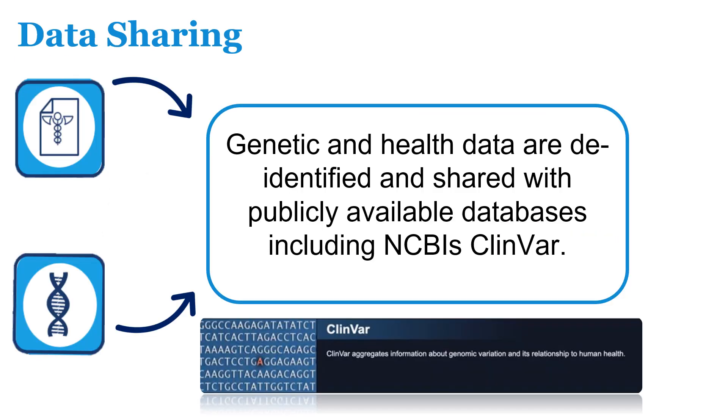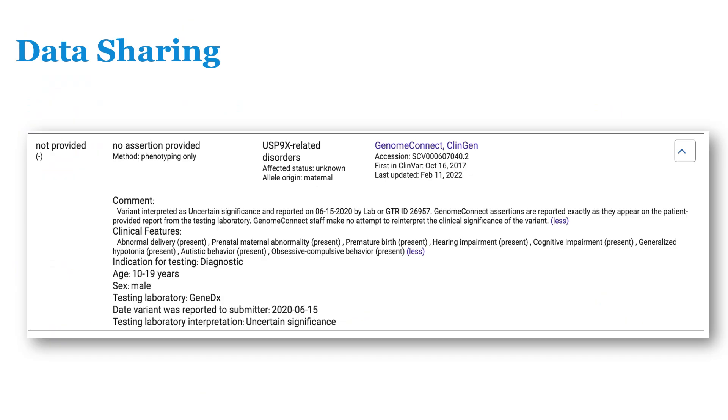Participation in GenomeConnect is one example of how individuals can improve our understanding of variants. With participants' consent, we securely share de-identified genetic test results and relevant health information with the National Center for Biotechnology Information's ClinVar. Sharing this information with ClinVar makes this de-identified information publicly accessible to researchers, laboratories, and other healthcare providers.